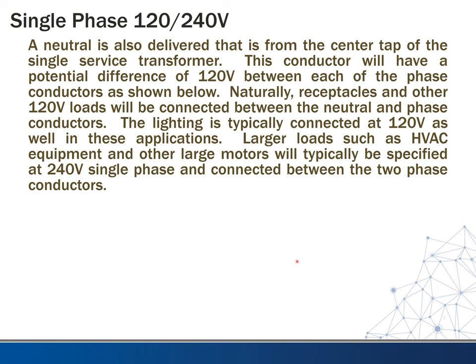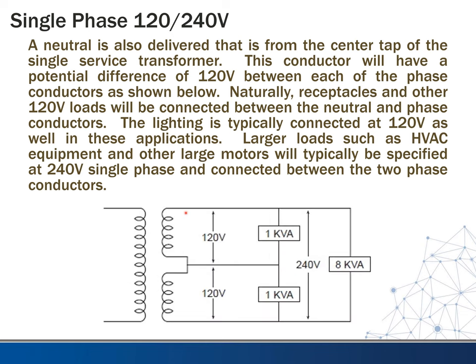This conductor will have a potential difference of 120 volts between each phase conductor. Looking at the diagram, we have two phase conductors on top and bottom — between them is 240 volts. The center tap off the transformer gives us our neutral and 120 volts. That's what you see at each electrical outlet in your house. If you plug in a dryer or oven, they connect between the phase conductors for 240 volts. Receptacles and 120-volt loads connect between the neutral and phase conductor; larger loads like HVAC, cooktops, and dryers go between the two phase conductors.